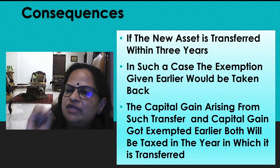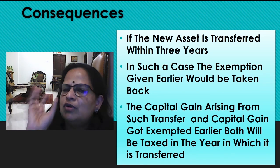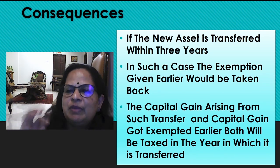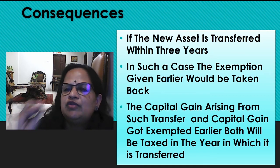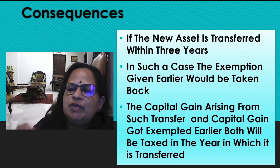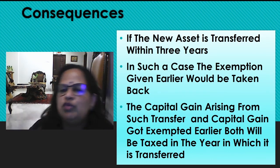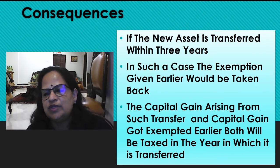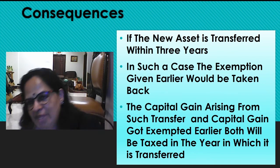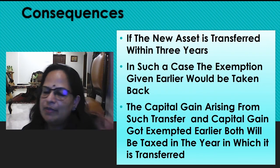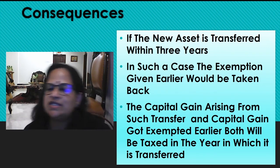Consequences: if the new asset is transferred within three years — all sections under section 54 have a lock-in period of three years. Before three years, if they are transferring, then they have to pay back the tax. Exemption given earlier would be taken back. Capital gain from such transfer and capital gain that was exempted earlier will both be taxed in the year in which it is transferred.